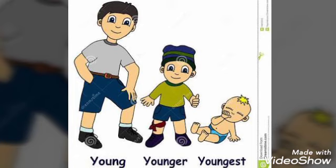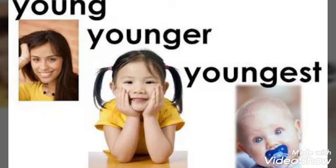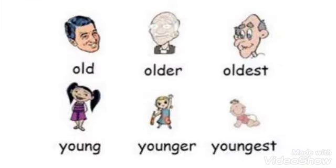Young, younger, youngest. See this picture and you can very well know the meaning of young, younger, and youngest. See another picture — the youngest one, then the younger, and the young. The superlative degree is youngest, the comparative degree is younger, and young is the positive degree.